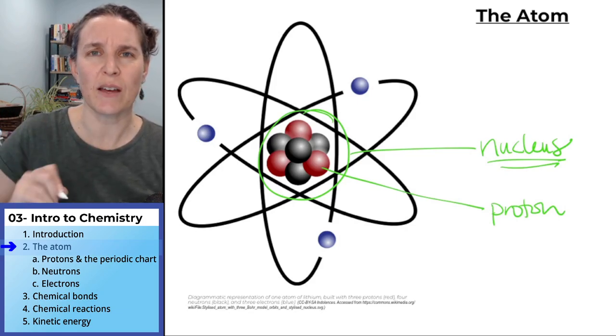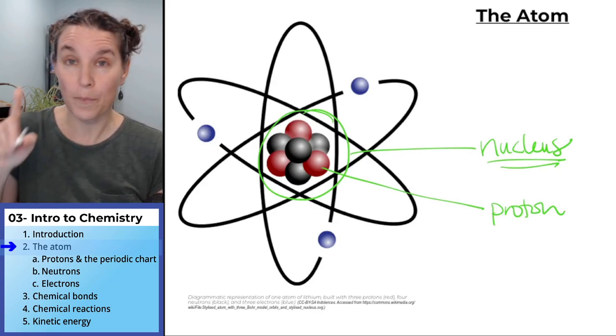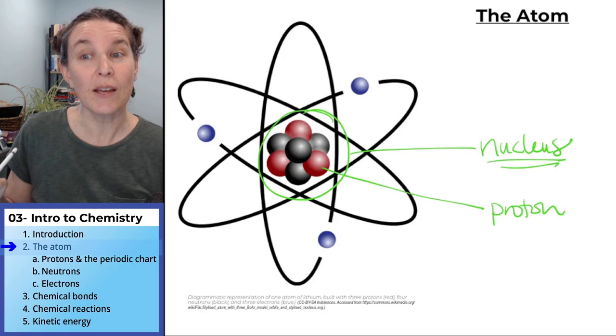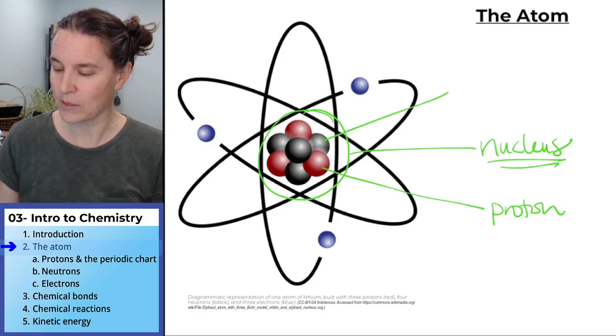There's no way for you to tell that. I would have to give you more information for you to know. But you do know that if I labeled the red particle as a proton, then the gray particle is going to be something else. And that's actually a neutron.